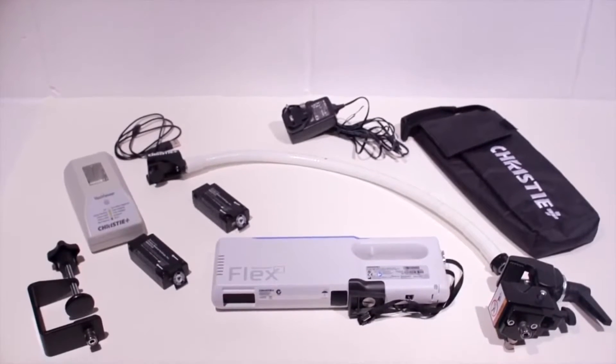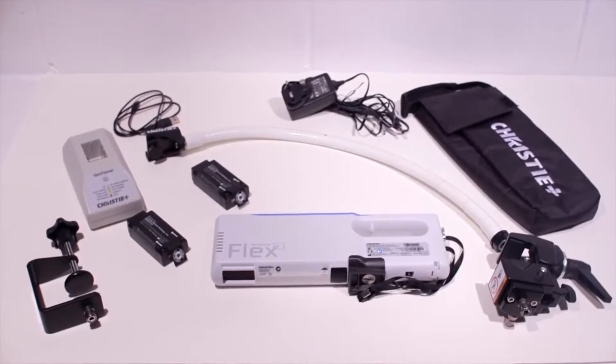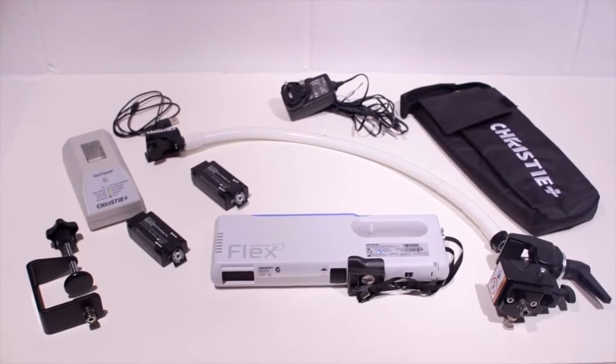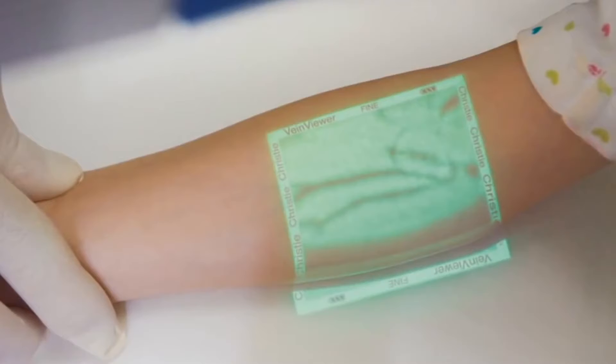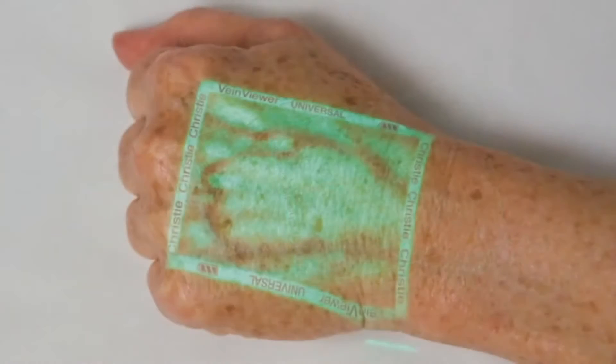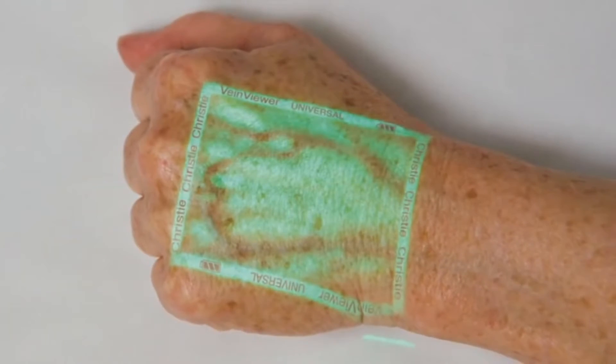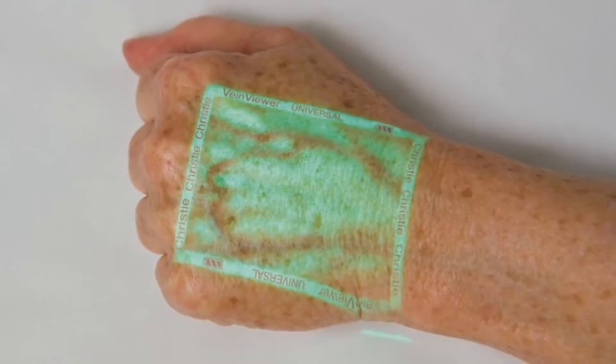VeinViewerFlex comes complete with a range of accessories, including two S-mount arms with two clamp-ons. Imagine the value of a device that could see through a patient's skin and provide you a real-time digital map of their vessels, greatly reducing needle-stick attempts and access time for procedures.